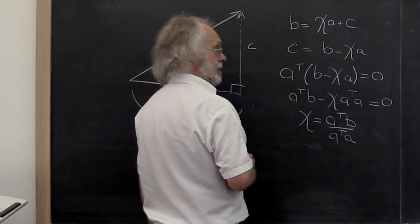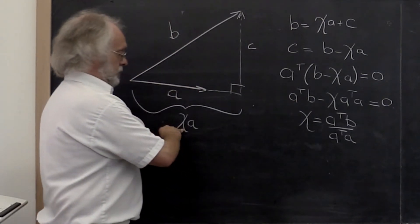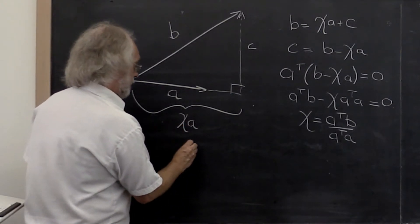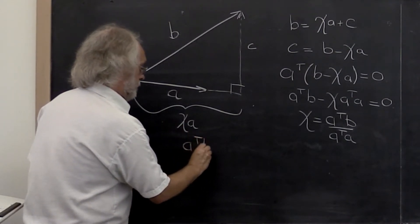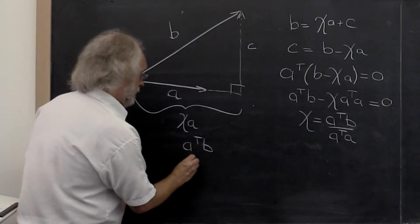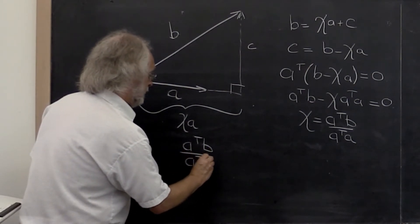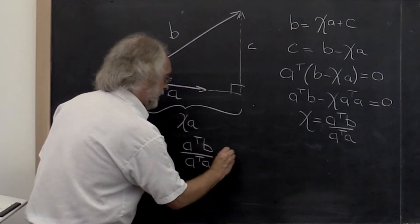And therefore, the component in the direction of A is given by A dot product with B divided by A dot product with itself, times the vector A.